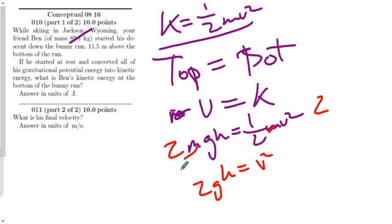Okay, now square root both sides, and my velocity will equal the square root of 2gh.